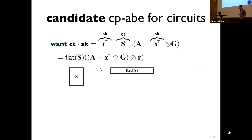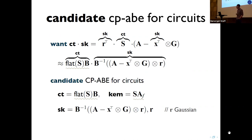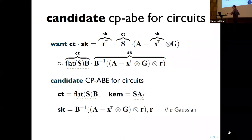Putting this together gives a very simple CP-ABE scheme for circuits. The ciphertext is an LWE sample with respect to B, where the secret is the flattening of S, and the secret key is a Gaussian preimage with respect to some matrix B. To the best of my knowledge there is no known attack on this scheme, but the question we address in this talk is: can we actually prove anything about it?